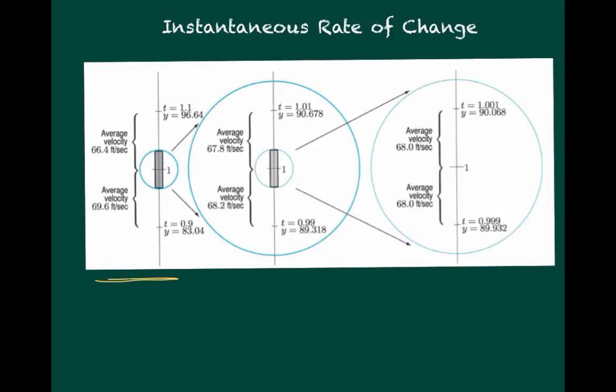So let's start this diagram over here on the left. And we're going to look at a time frame from a tenth of a second less than the 1 second mark, and a tenth of a second after 1 second. And we will look at the position, a tenth of a second before, and a tenth of a second after. And when we use those two values to calculate the average velocity, we can see that we had an average velocity before 1 second of 69.6, and a tenth of a second after is 66.4. The difference between those two is 3.2 feet per second.